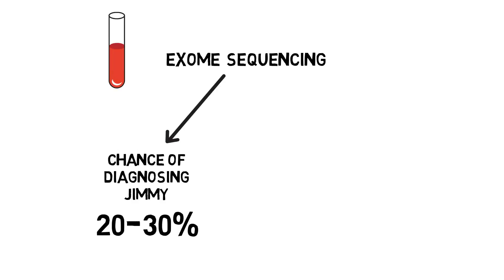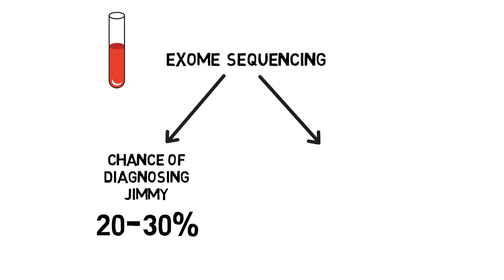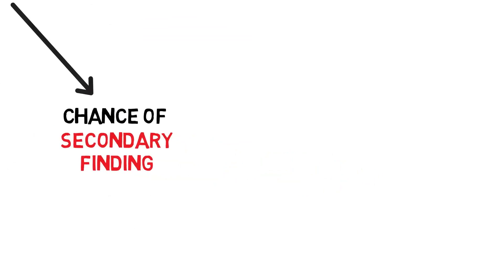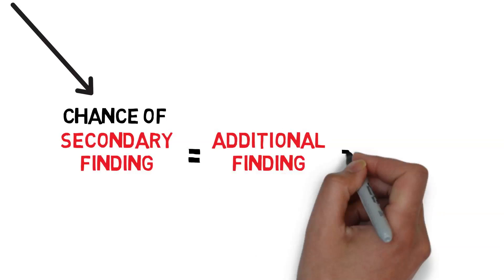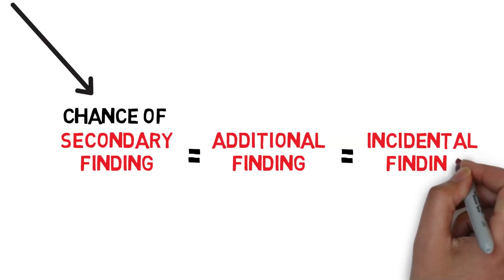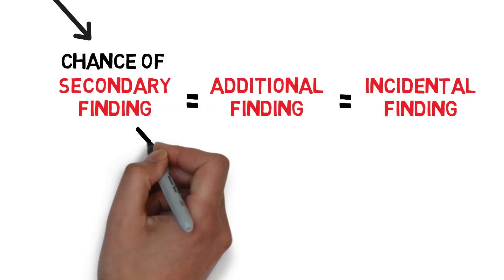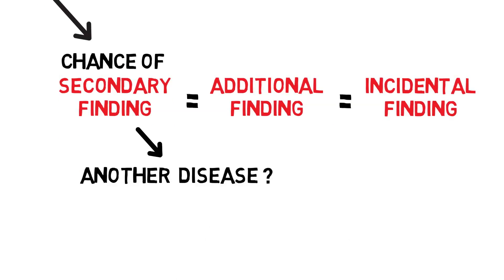There is also a chance the test might reveal other genetic changes, referred to as secondary findings. These secondary findings are also sometimes called additional or incidental findings. A secondary finding is when a gene change is found that is completely unrelated to the original reason why the testing was done, which increases Jimmy's risk for another disease.